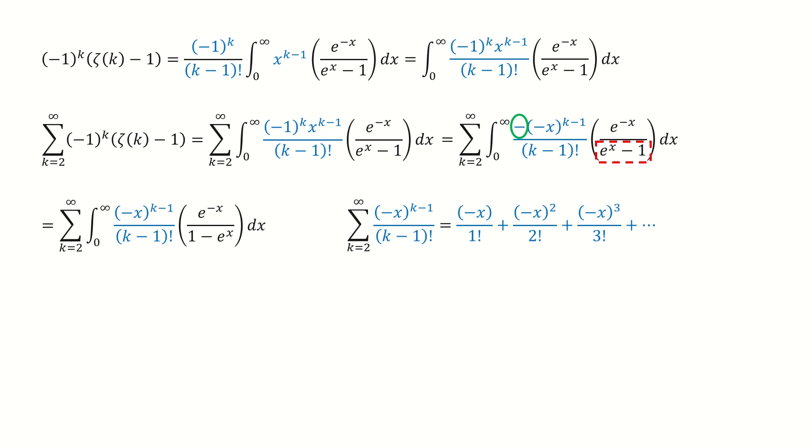For this series, I list the first three terms to help you better visualize. Recall the Maclaurin series for e to the power negative x. This series is uniformly convergent for arbitrary x belongs to real numbers.